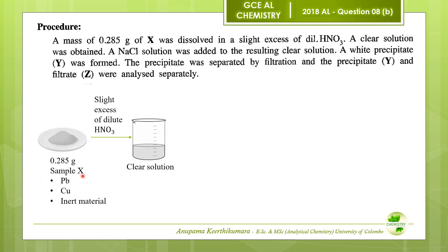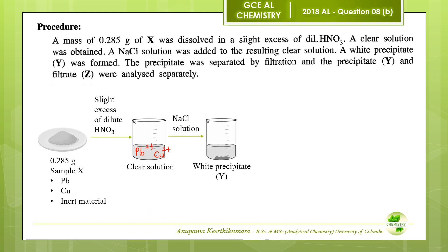Sample X contains lead, copper, and an inert material. 0.285 grams of sample X was dissolved in a slight excess of dilute nitric acid, and a clear solution was obtained. These two metals react with dilute nitric acid, so lead²⁺ ions and copper²⁺ ions are present in the clear solution. Next, sodium chloride solution was added to the resulting clear solution, and a white precipitate Y was formed.